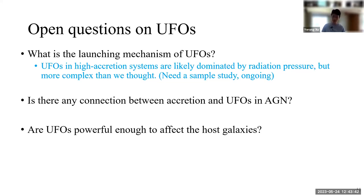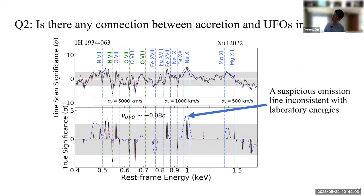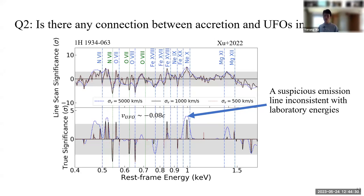The second open question is: is there any connection between accretion and UFO in AGN? Actually, the UFO response to changes in source luminosity already gave a positive answer. But I would like to extend this further with my work on another narrow-line Seyfert 1 galaxy, 1H1934. I performed a blind Gaussian line scan over the XMM-Newton RGS spectrum of this source, and the result shows a warm absorber and a moderately ionized UFO.